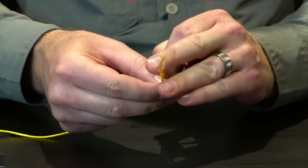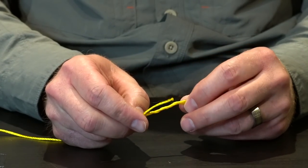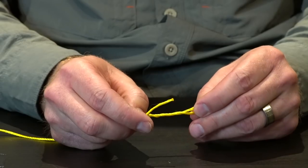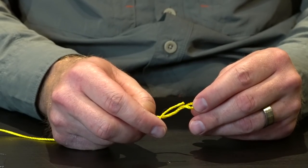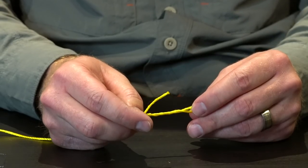Like all knots you need to make more wraps for thin material and you can get away with less wraps for thick material. Generally speaking you're going to need at least three or four wraps on really thick stuff and most fly fishing tippets you'll want probably five or six turns.